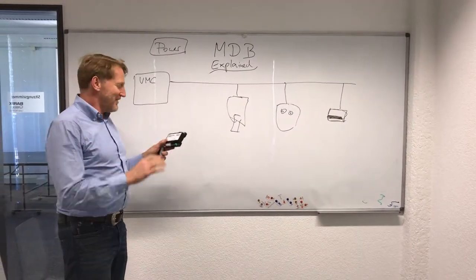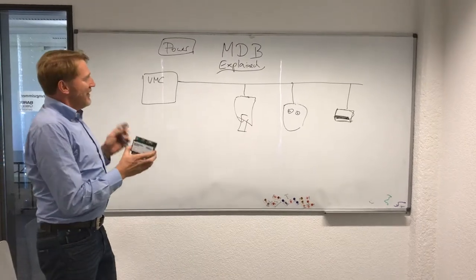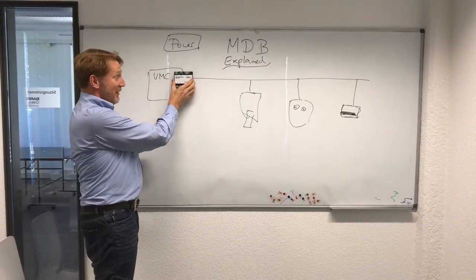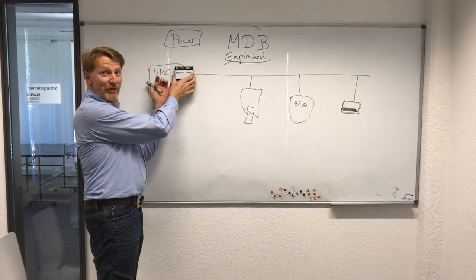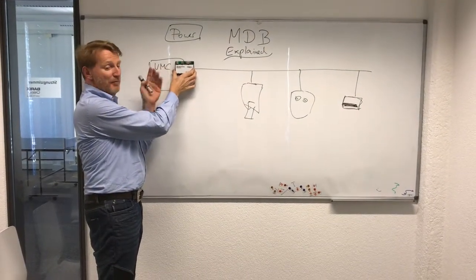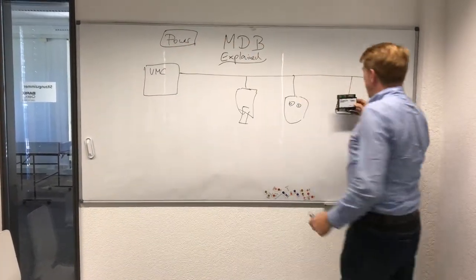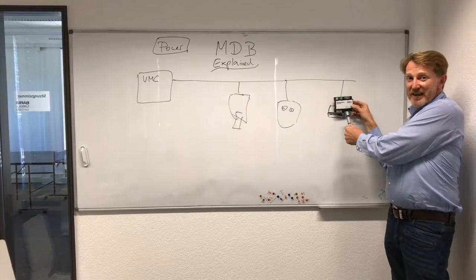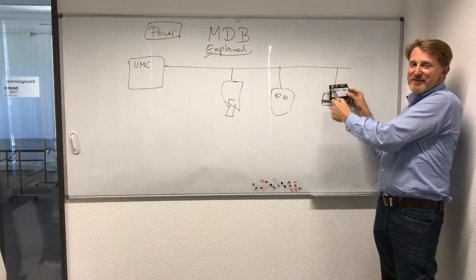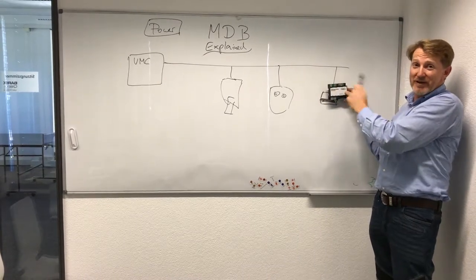MDB explained one more — this is your bonus track. We explained the use of the MDB USB interface as the master, so you can build your own vending machine controller from a PC, Raspberry Pi, or Beaglebone controller or whatever. We also explained the use of the device as a slave, so you can simulate or actually implement a device which gives credit to the vending machine controller so it actually dispenses.